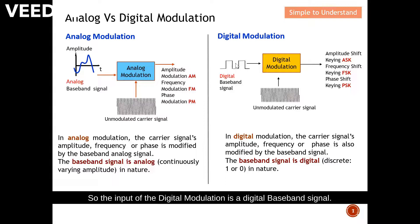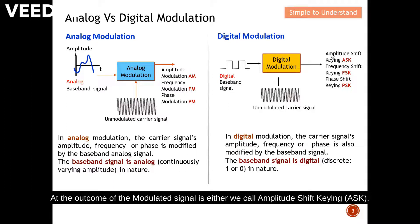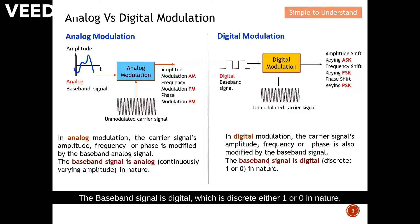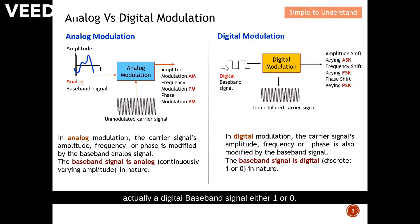For digital modulation, the input is a digital baseband signal. At the output, the modulated signal is called Amplitude Shift Keying, Frequency Shift Keying, or Phase Shift Keying. In digital modulation, the carrier signal's amplitude, frequency, or phase is also modified by the baseband signal, but the baseband signal is digital — discrete, either one or zero in nature. The key difference is that analog modulation takes an analog input, while digital modulation takes a digital baseband signal of ones and zeros.